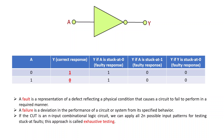First, let us understand what a stuck-at fault is. Consider a simple example of an inverter with input A and output Y. This is the truth table. Input A can have two values, 0 or 1. When input is logic low, the output will be logic high, and when input is logic high, the output will be logic low. This is the correct response.